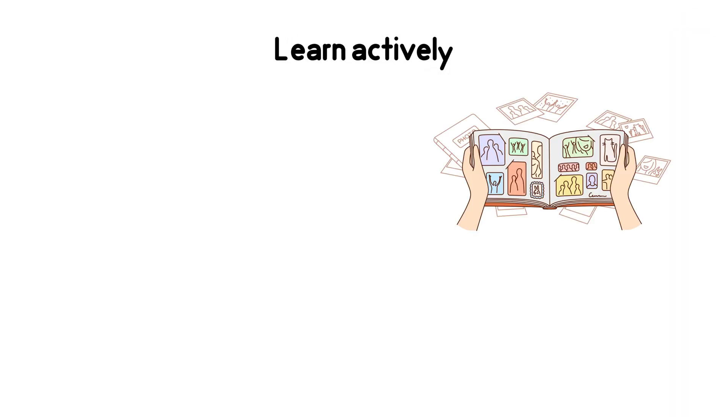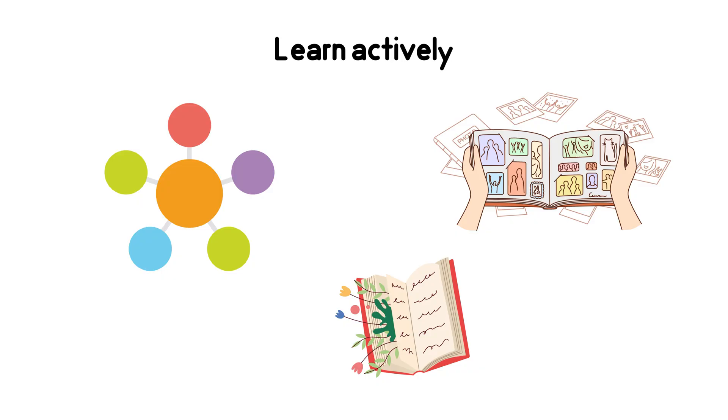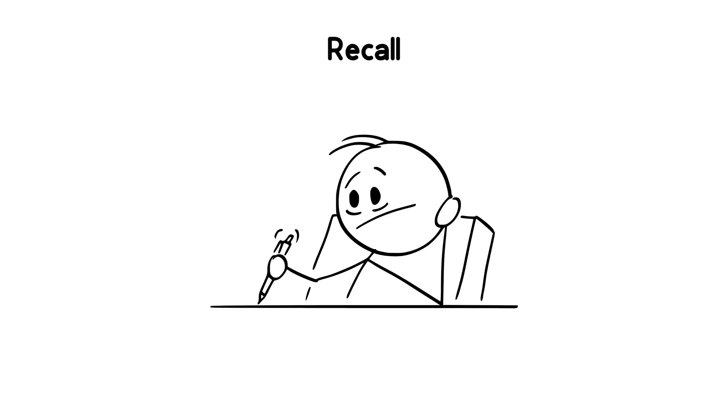Learn actively. Use visual notes, mind maps, or storytelling. Don't just read. Engage with it. Recall. Close the book and challenge yourself. The brain only grows when it struggles. It's called desirable difficulty.